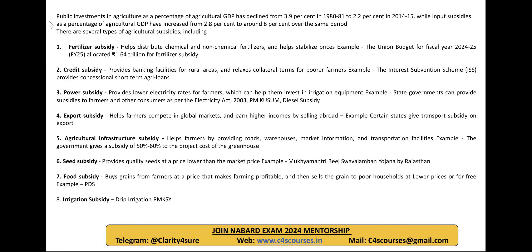We can start with an introduction: public investments in agriculture as a percentage of agriculture GDP has declined from 3.9% in 1980-81 to 2.2% in 2014-15, while input subsidies as a percentage of agriculture GDP have increased from 2.8% to 8% over the same period. Coming to the main context, everyone knows about fertilizer subsidy — the Indian government is spending so much. For example, this year's budget has 1.64 trillion in fertilizer subsidies. Then for credit, the modified interest subvention scheme (MISS) offers an effective rate of interest of 4%.